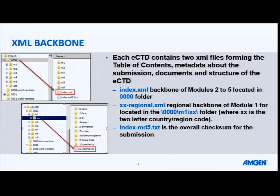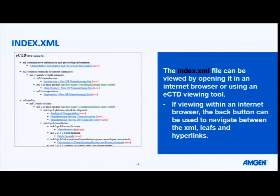What I've just shown you on those two slides are what you would expect to see and need to have in your sequences when you submit to the agency. This is an example of what an index XML actually looks like. The best way I can describe it is when you open it in Internet Explorer or Google Chrome, it's the most boring looking website you have ever seen. There are no pretty pictures — it's just a series of text that you can then use to navigate your submission.